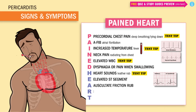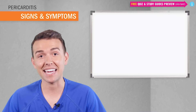R is for really tired, or fatigued, from the lack of oxygen that the heart isn't pumping. And finally, T is for tripoding — leaning forward. This takes pressure and pain off the heart, so you'll see patients do this often.